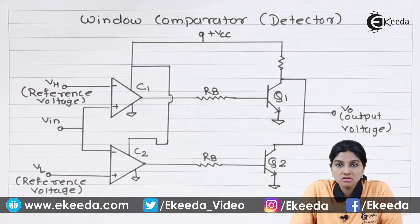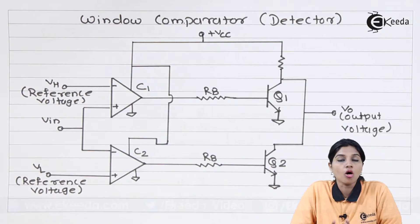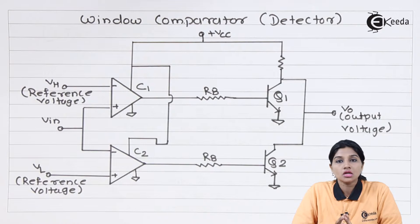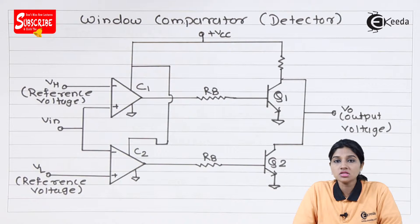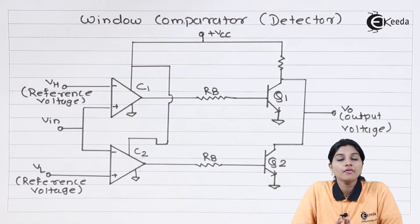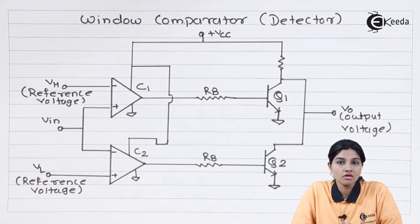A comparator is basically a circuit which is used to compare two input signals applied to the inverting and non-inverting terminals of an op-amp when the op-amp is used in open loop configuration. The input signal to be compared is applied to either the inverting or non-inverting terminal, whereas the reference signal is applied to the other input terminal. Therefore the comparator circuit has two inputs, V_reference and V_in, and one output, V0.